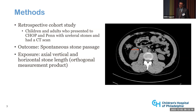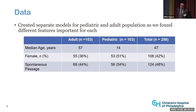We created two separate models for the pediatric and adult populations because different features were important for each group. We had a total of about 256 patients, of which 153 were adults and 103 were children. The mean age for adults was 57, and 14 for kids. 36% of adults were female and 51% for kids. 44% of adults passed their stone spontaneously and 54% for the pediatric population.